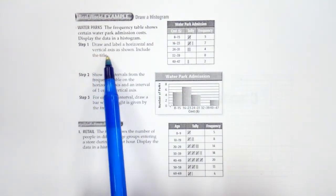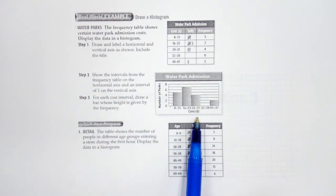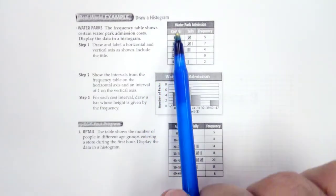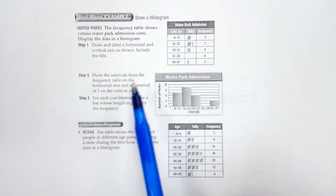So draw and label the horizontal and vertical axes as shown, include the title. So we have our cost, because our cost is our x value, and our frequency is our y value, so number of parks. Okay, so frequency.